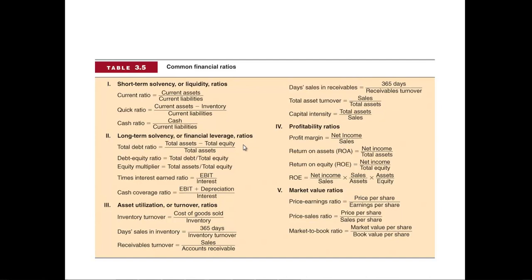Sometimes we're interested not in short-term liquidity, but the long-term solvency of a company. How much debt does it have relative to its equity? Borrowing is okay, but if you borrow too much money, you may have trouble meeting your obligations. We have the debt ratio — total assets minus total equity divided by total assets, which is just total liabilities divided by total assets. The most common one is the debt-equity ratio: total debt divided by total equity. A ratio of one means the firm is using the same amount of debt as equity. A ratio of one-half means it has twice as much equity as debt. A debt-equity ratio of two means you're using twice as much debt as equity.